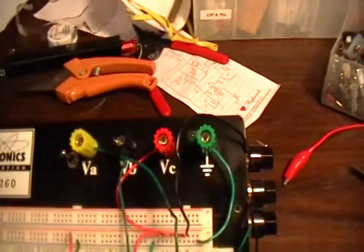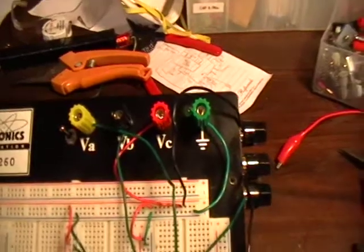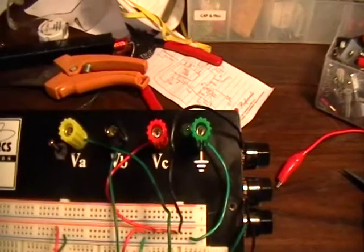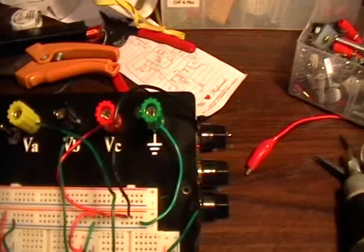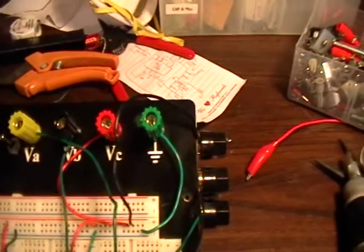Up here we've got some more binding posts. Yellow is the amplifier, black is negative 9 volts, red is positive 9 volts, and green is ground.